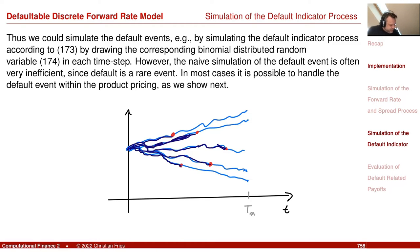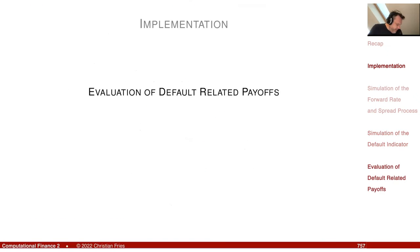So on each sample path you have the default time — one additional random number per sample path. My sample path is already a vector of roughly 80 numbers: 40 non-defaultable forward rates and 40 spreads. One additional entry is the default time, and then the sample path just stops at that point. However, this approach is very inefficient, and it is possible to do this much more efficiently.